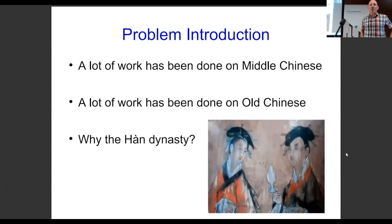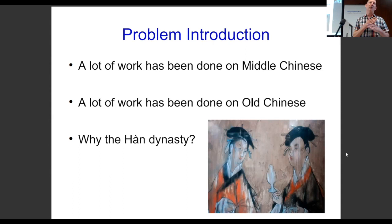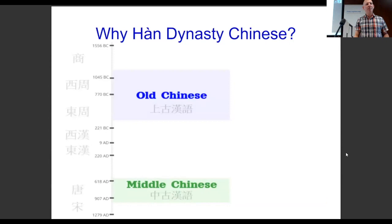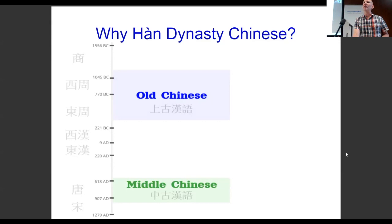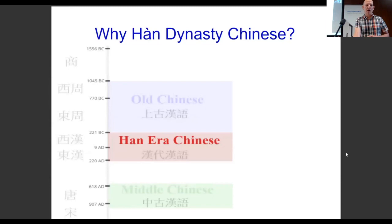So, problem introduction. Basically, there's been a lot of work done on Middle Chinese and a lot of work done on Old Chinese, and Han Dynasty Chinese falls in between these — but it's not just that it time-wise falls in between. It's actually a crux of change between Old Chinese and Middle Chinese. Also, depending on your definition of Old Chinese, some scholars actually include the Han Dynasty as part of Old Chinese. We go by the Baxter definition, so it doesn't include Han Chinese. The Han falls right in the middle, and it's interesting to note that the amount of sound change that happens in this earlier period is larger than what happens in the later period.